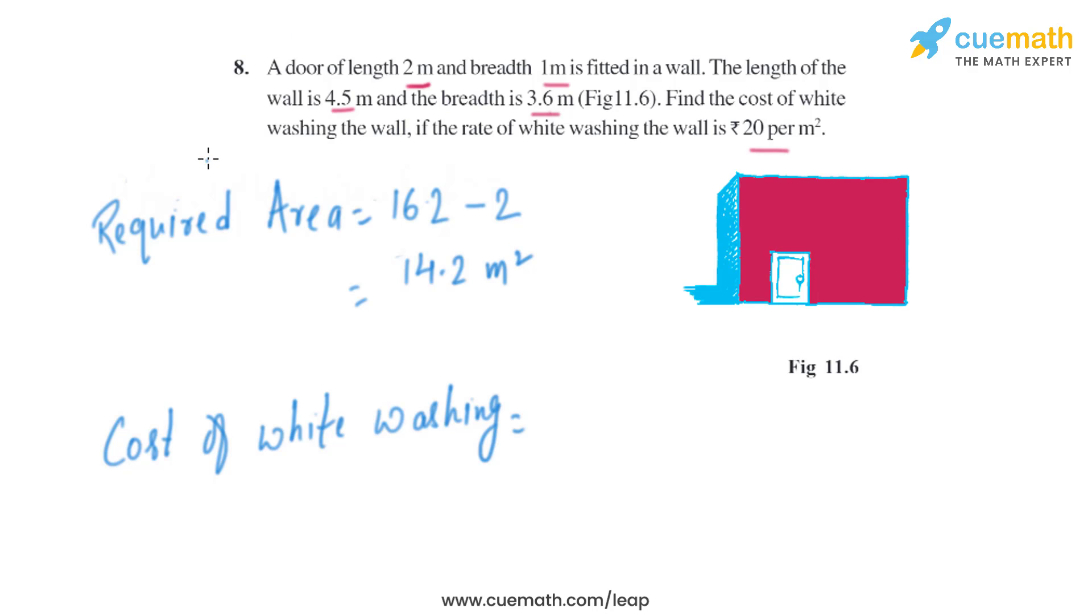Now we have to find the cost of whitewashing the wall. The rate of whitewashing is given as 20 rupees per square meter. The area is 14.2 square meters, so we just need to multiply 20 with 14.2. When we multiply, we get 284 rupees. That is the cost of whitewashing the wall.